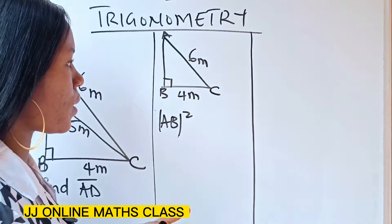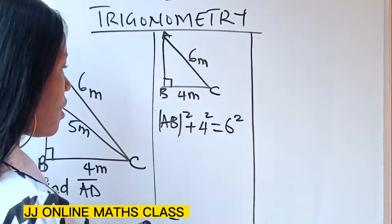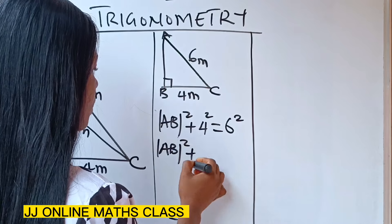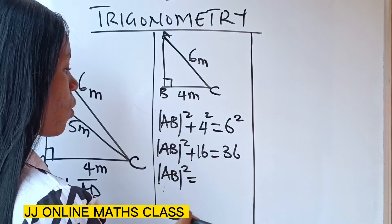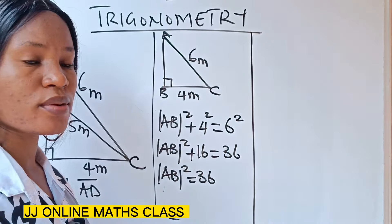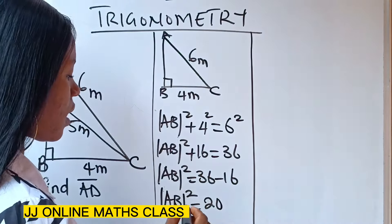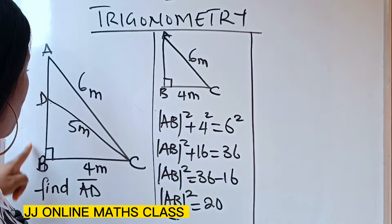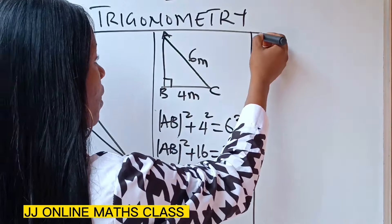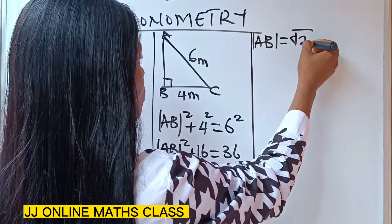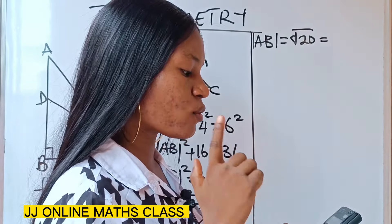Line AB squared plus BC squared — that is four squared — is going to give us AC squared, that is six squared. So line AB squared plus four squared, which is 16, is equal to six squared, which is 36. Line AB squared equals 36 minus 16, which gives us 20. Therefore AB equals the square root of 20, which gives us 4.4721.